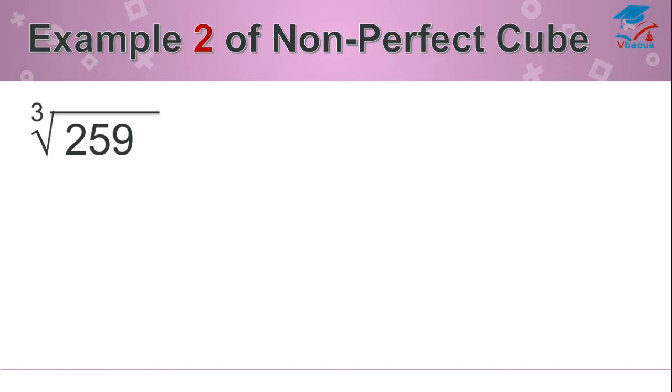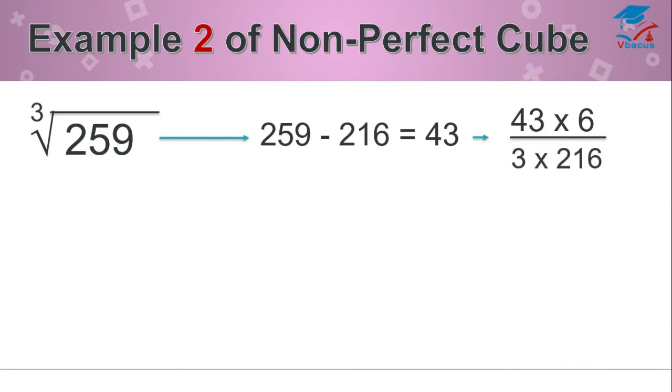Let us take another example. Find out the cube root of 259. Let us see where 259 falls, because 259 is very close to 216, that is cube of 6. So find the difference between 259 and 216, that is 43. And 43 should be multiplied by actual cube root of 216, that is 6.